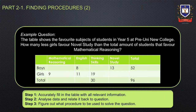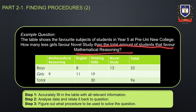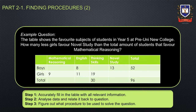Firstly, we will be looking at a table and graph type of question. A table and graph question requires students to process information given through a table or graph and answer questions related to it. Consider the following example: The table shows the favourite subjects of students in year five at Pre-Union College. How many less girls favour novel study than the total amount of students that favour mathematical reasoning? We are given information through a table. To solve this question: accurately fill the table with relevant information, then analyse the data and relate it back to the question, and lastly figure out what procedure is to be used.